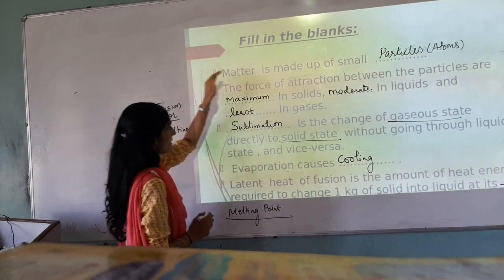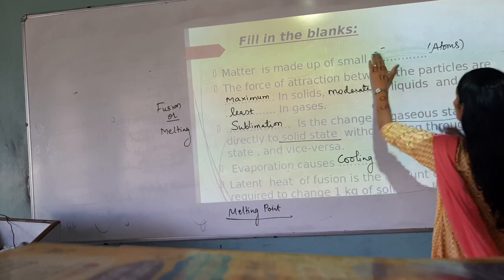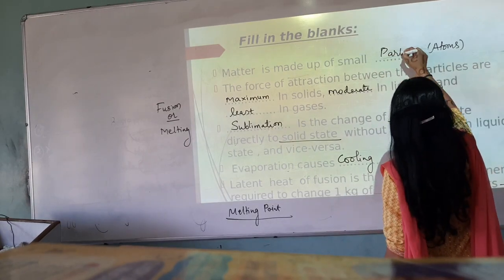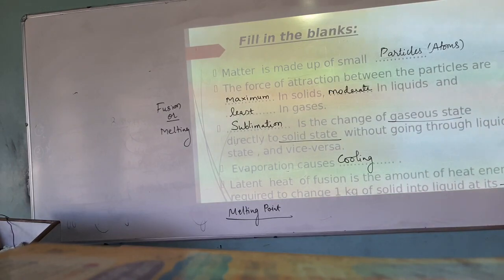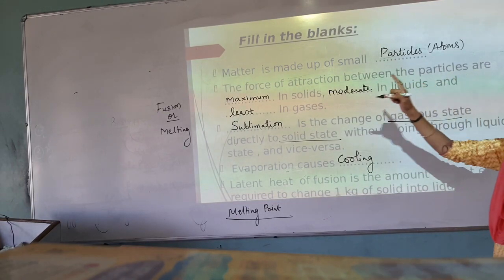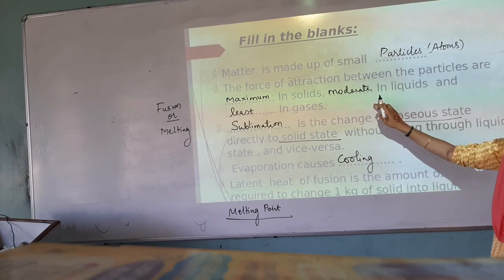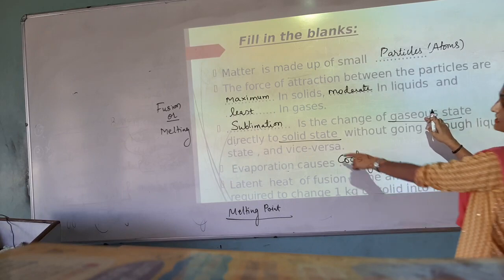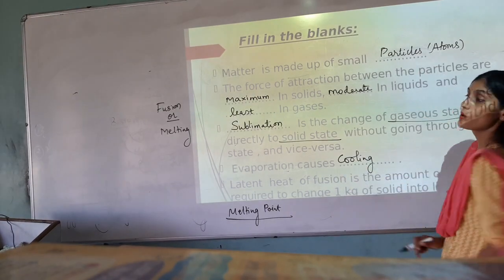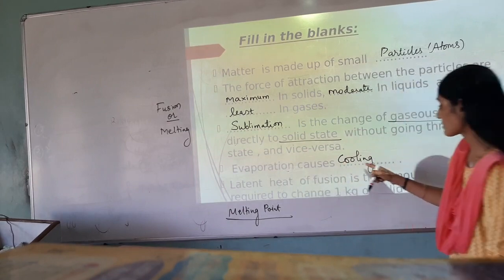Revising: matter is made up of small particles, so the first answer is that particles are the building blocks of matter. The force of attraction between particles is maximum in solid, moderate in liquid, and least in gases. Sublimation is the process by which we can convert gases directly into solid without changing into liquid, and vice versa. Evaporation causes cooling.